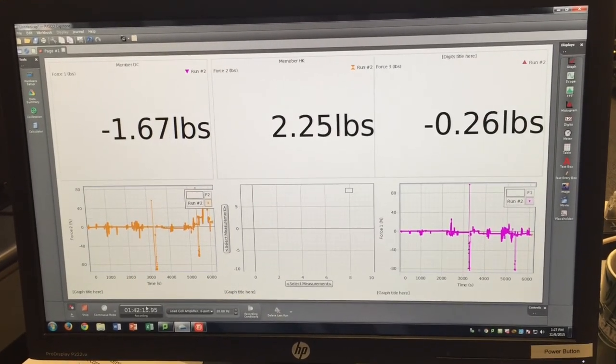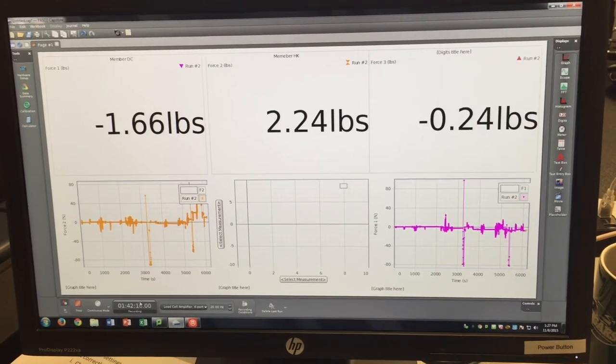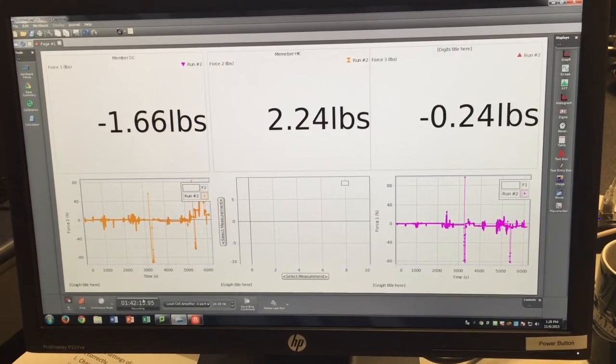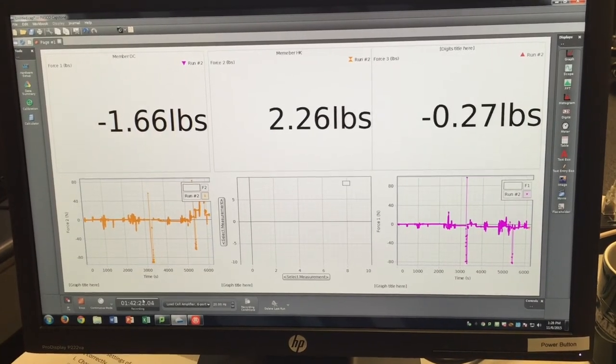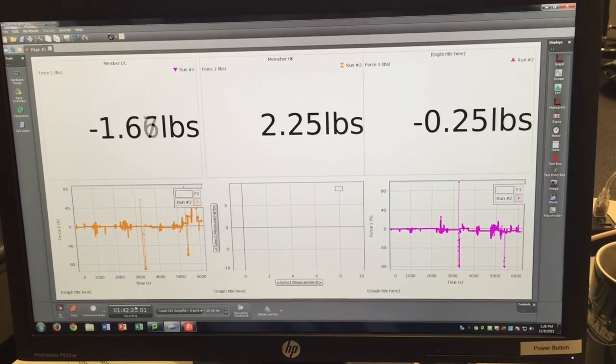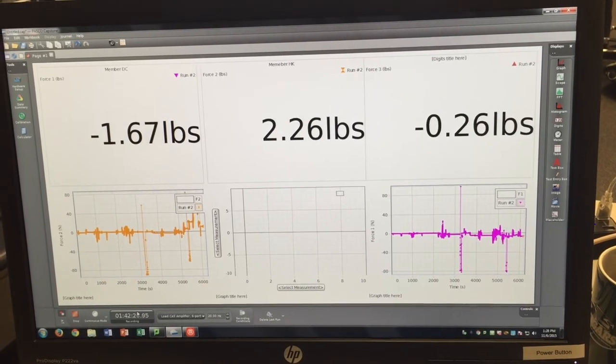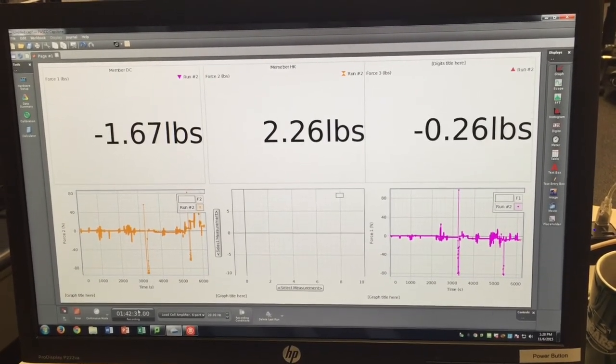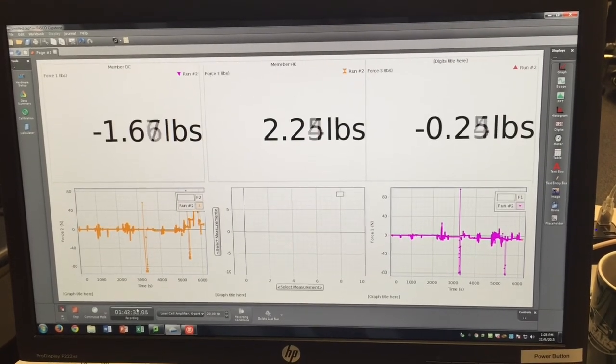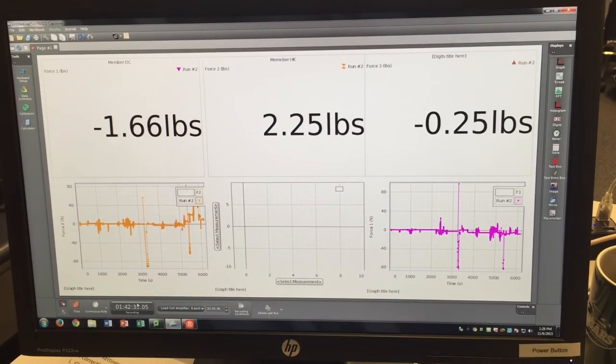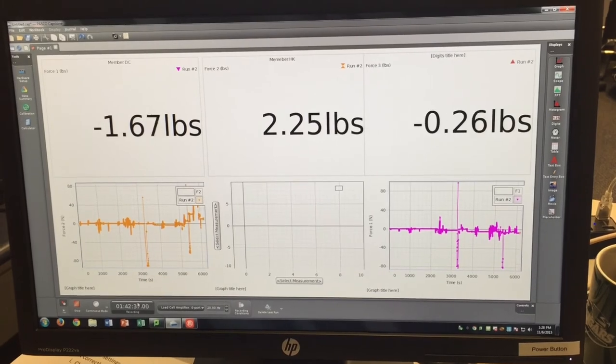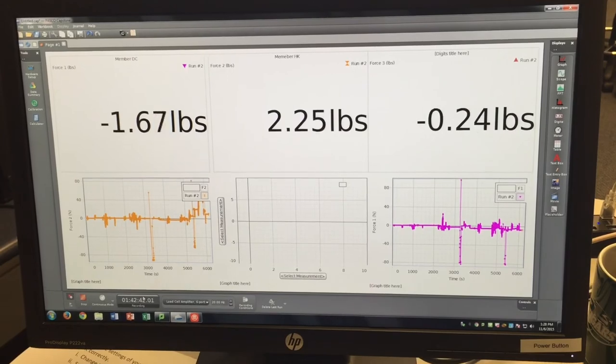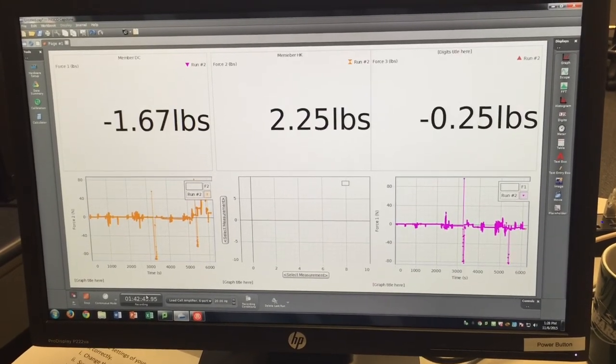And then if we look at this third one, which we attached to what we assumed to be a zero force member on the tower section of the crane, we see that it is very low force, which it's not exactly zero but we can assume that it is acting as zero force. But the gusset plates again could be distributing some force onto there, not making it absolute zero.